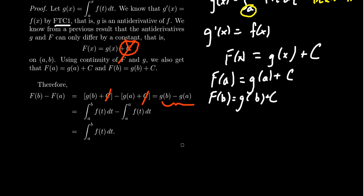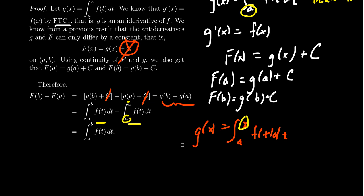Looking at the definition of g(x) — the integral from a to x of f(t) dt — we plug in a and b. If you evaluate an integral from a to a, that equals 0, regardless of the function. So you're left with F(b) minus F(a) equal to the integral from a to b of f(t) dt. We start with the integral, compute an antiderivative, evaluate at the limits, take the difference, and that gives us the definite integral — the area under the curve.